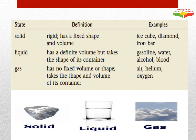Let's talk about the definition of each state and some examples. The first one is solid. As you can see, a solid has a definite shape — it is rigid. It has a fixed or definite shape and also a fixed or definite volume. So the volume and the shape do not change. For example, cubic ice is a solid.